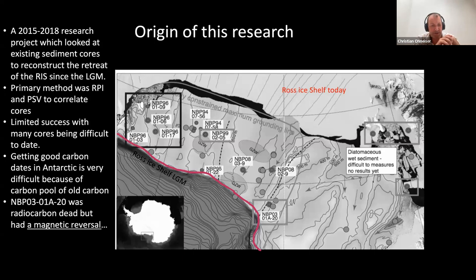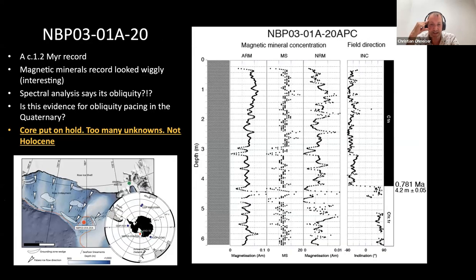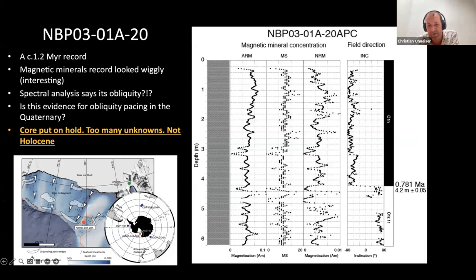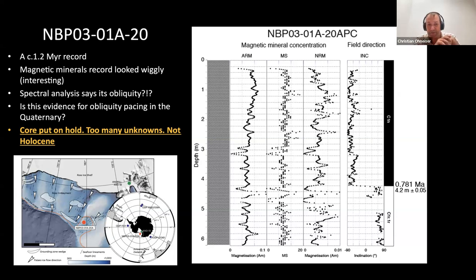In the process of doing this research, one of the cores we measured — NBP-03-01A20 — had a reversal in it. That was a surprise because it's a six-metre-long mudstone with a clast succession, and that already told us the base of the core is about 1.2 million years old. The magnetic mineral concentration records — susceptibility and ARM — looked a bit wiggly, which I found very interesting. The question was whether this was a record of ice margin advance and retreat, something oceanographic, or something else. But because the project was Holocene, it was out of scope, so we put it in the too-hard basket.